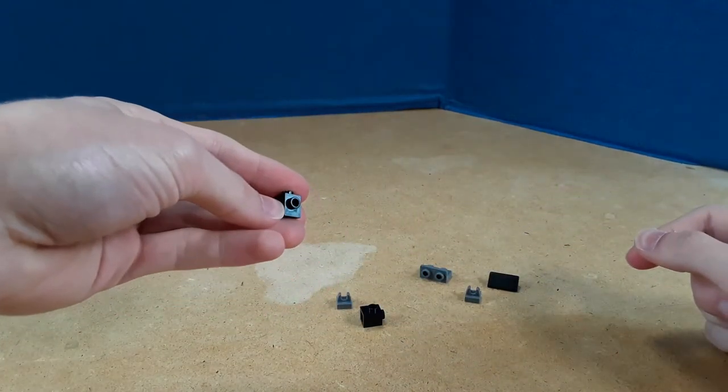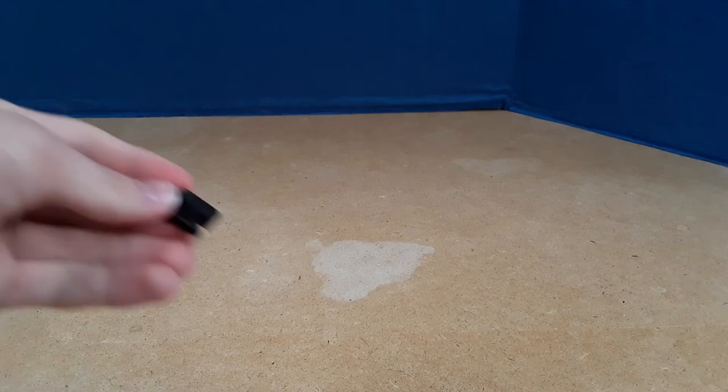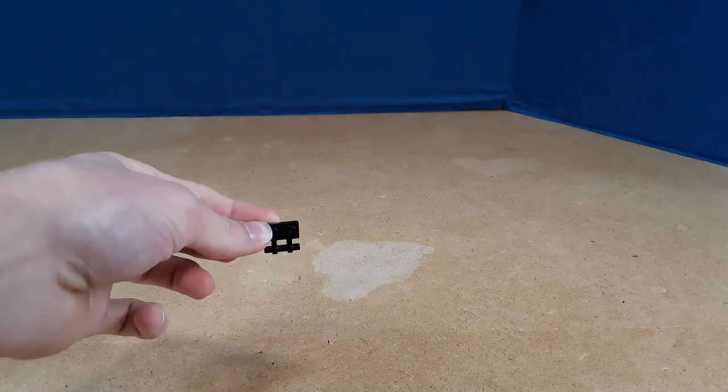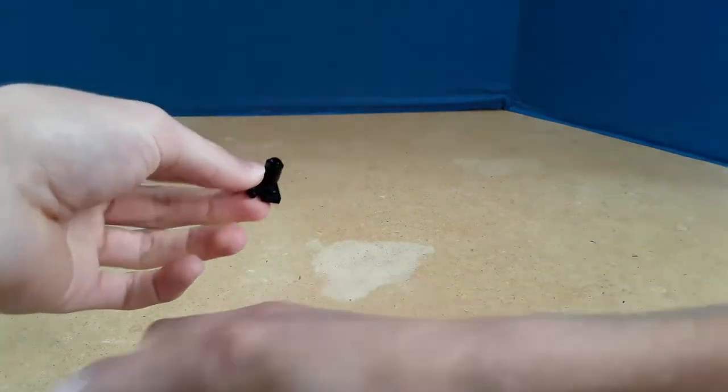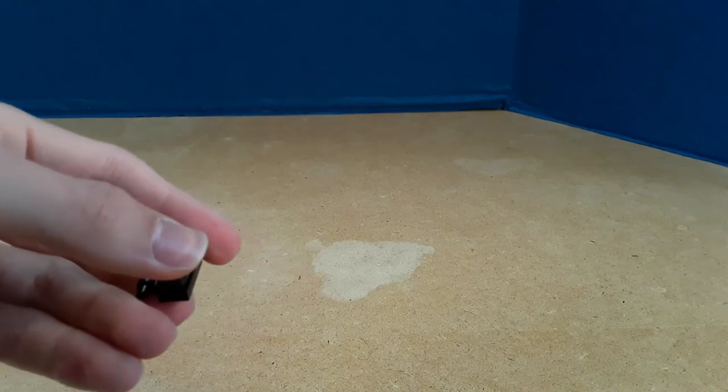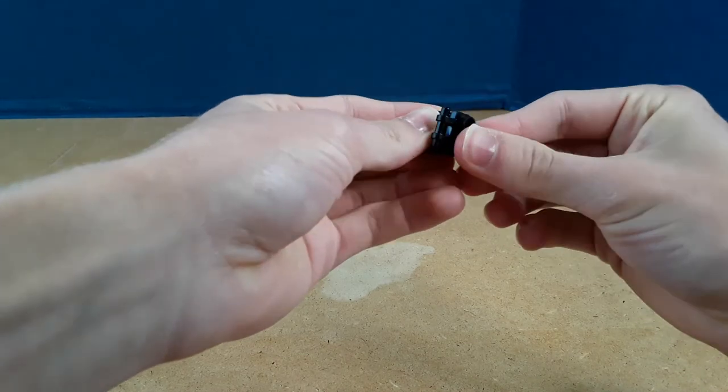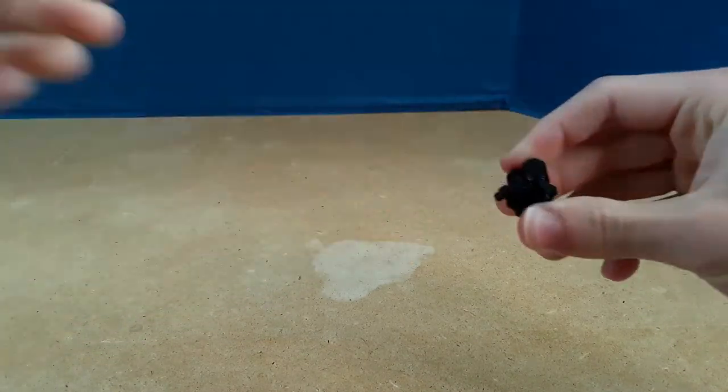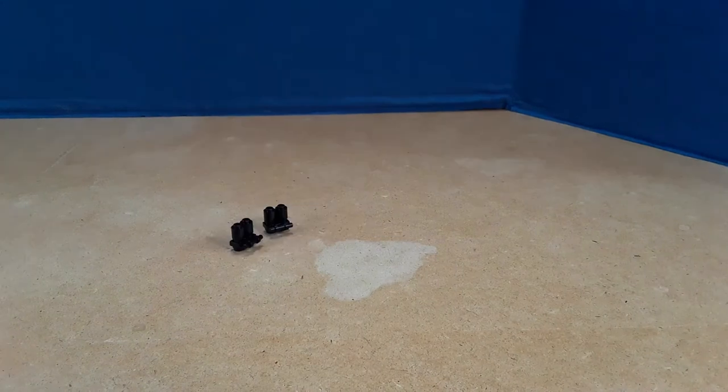So first you'll build the jets. You can take one of these one-by-two plates with a rod on the side, put two of these one-by-one black round bricks on the top, and then two one-by-one plates on the bottom. And then you're going to make a second one of those.